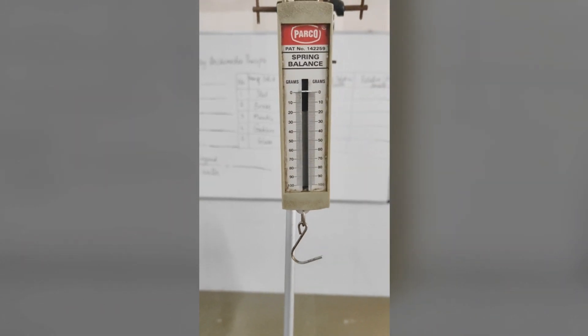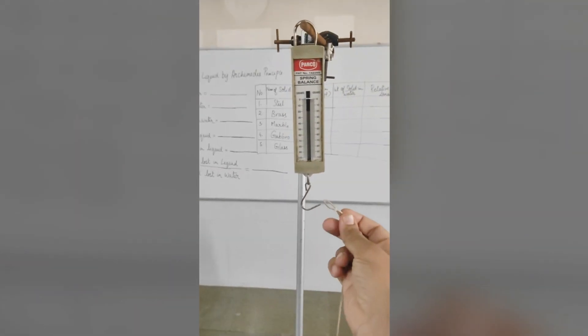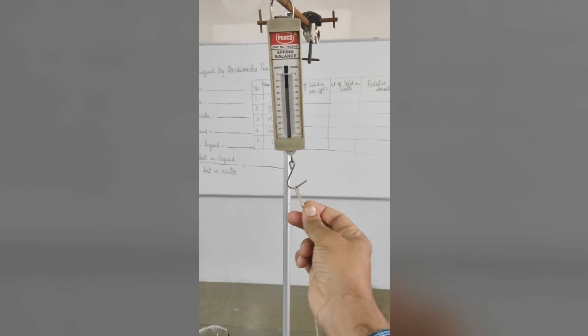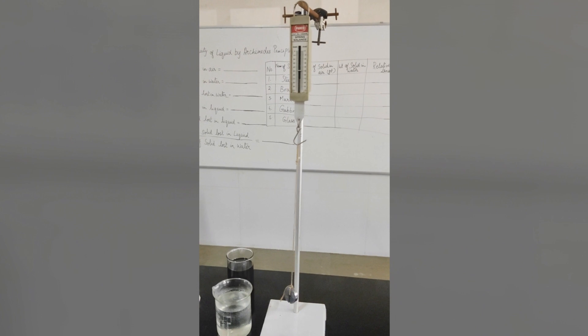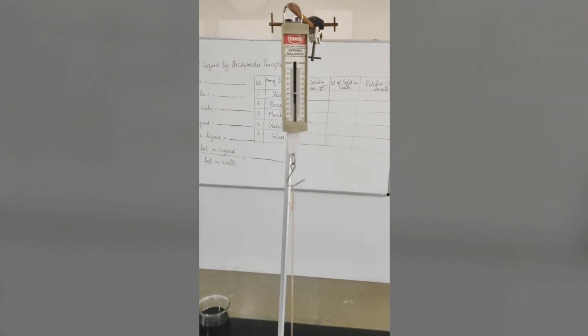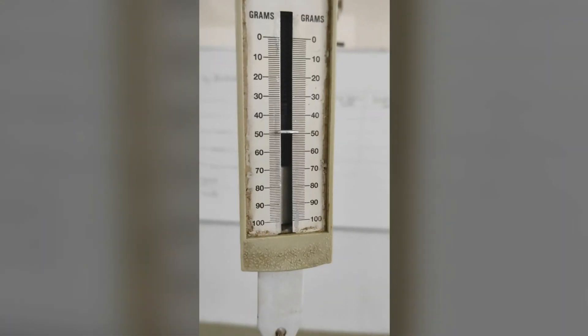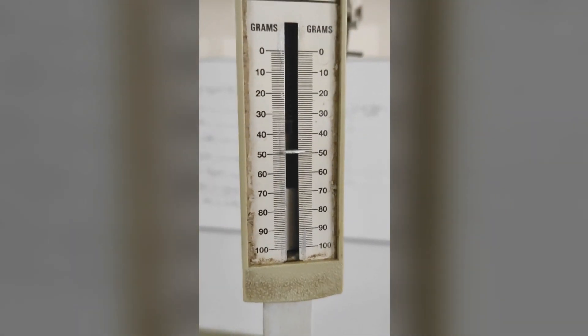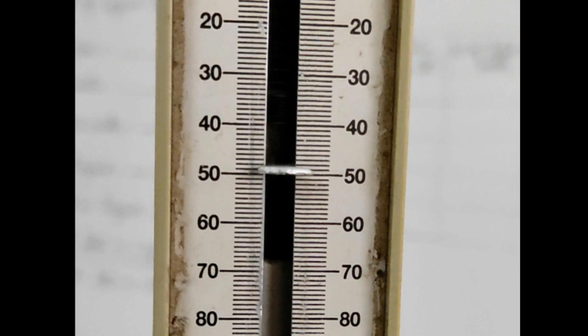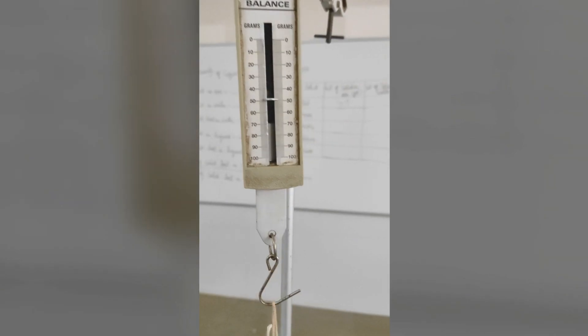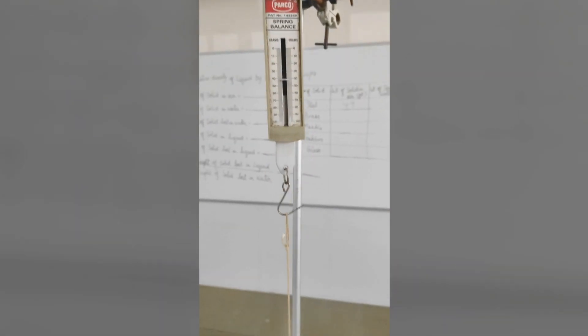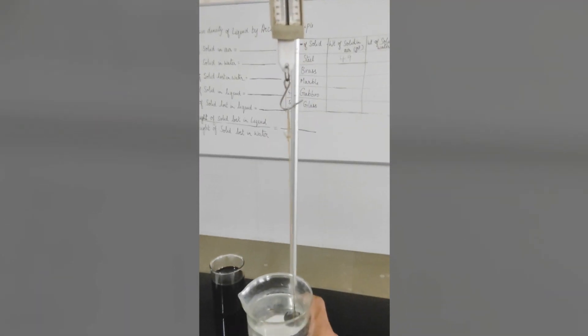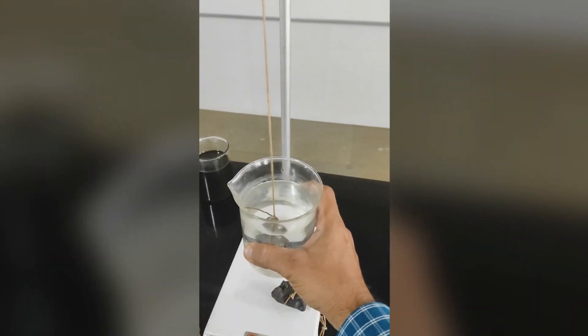Now we are ready to start the experiment. First I am taking steel object and as you can see here it is suspended in air. So, the weight of steel object in air is 49 gram force.